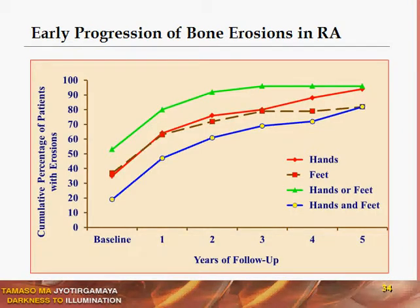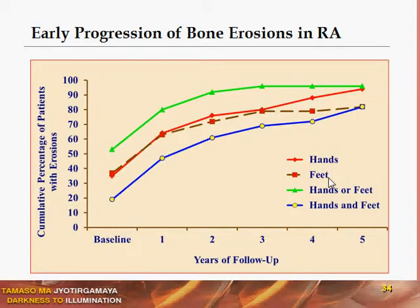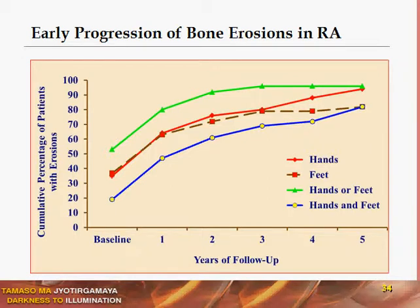This graph shows the very early progression of bone erosions characteristic of rheumatoid arthritis. At baseline, the cumulative percentage of patients with erosions is around 5 to 15 percent for the hands and feet. The red line represents hands, the box line represents feet, the green and blue lines represent hands or feet combined. By around one to two years, erosions peak at 60 to 90 percent — so the majority of bone erosion damage occurs within two to two and a half years.